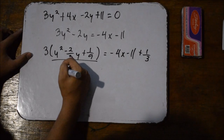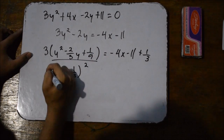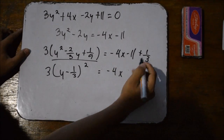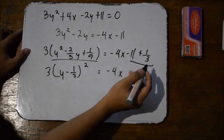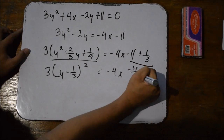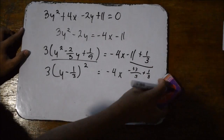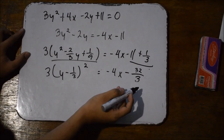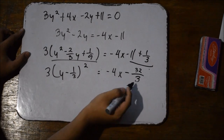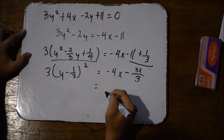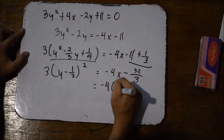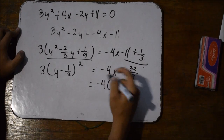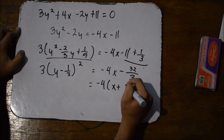This equation can be simplified as y minus 1 third squared, times 3. Then negative 4x. Adding the like terms: negative 11 is also negative 33 over 3, plus 1 third, giving us negative 32 over 3. After that, we need to factor out negative 4: negative 4 times the quantity of x, removing the negative sign since it's already placed outside. 32 divided by 4 is 8 thirds.